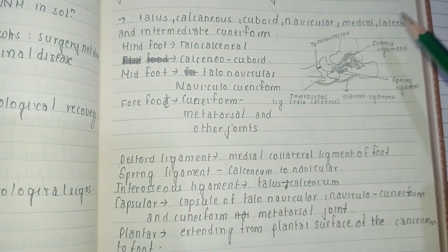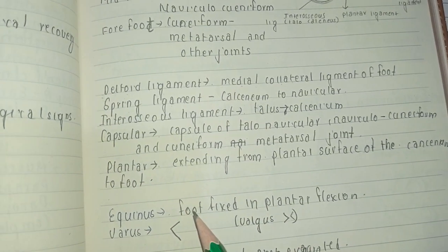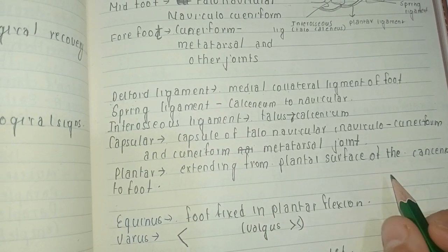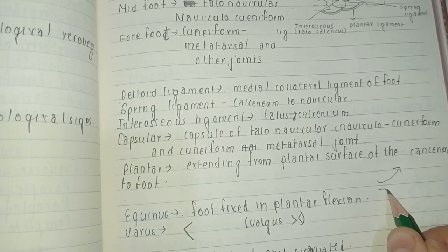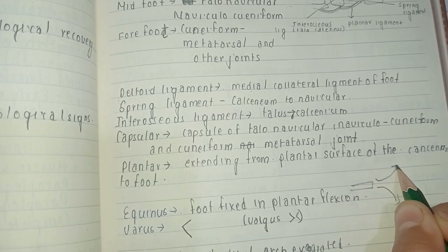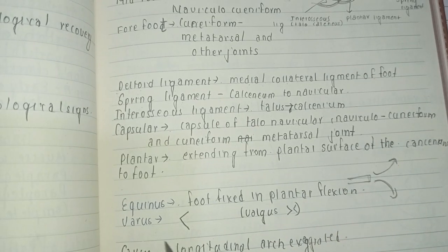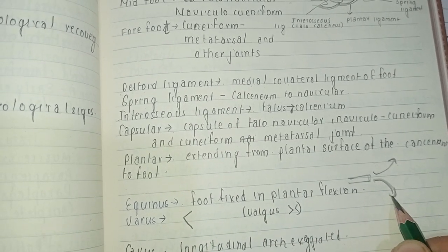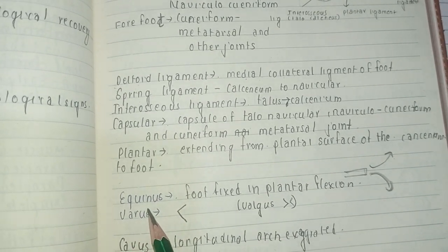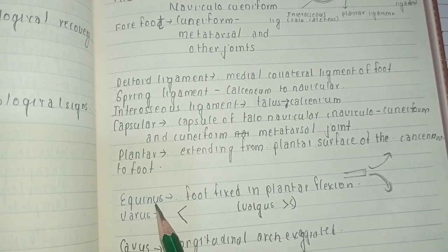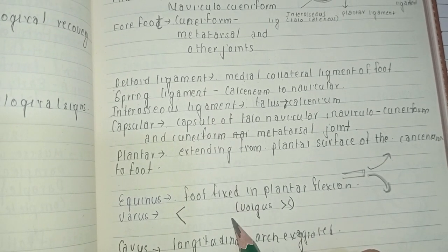We need to learn some terms necessary to understand this deformity. The first is equinus: equinus is the foot fixed in plantar flexion. When the foot moves upward, that is dorsiflexion; downward movement is plantar flexion. When the foot is fixed in plantar flexion, it is known as equinus.